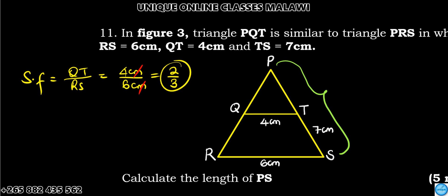Next, we can use the scale factor to find the length of PS. Using the scale factor 2 over 3, which is QT over AC, we apply this to find PT. So the scale factor 2 over 3 relates to the length of PT.